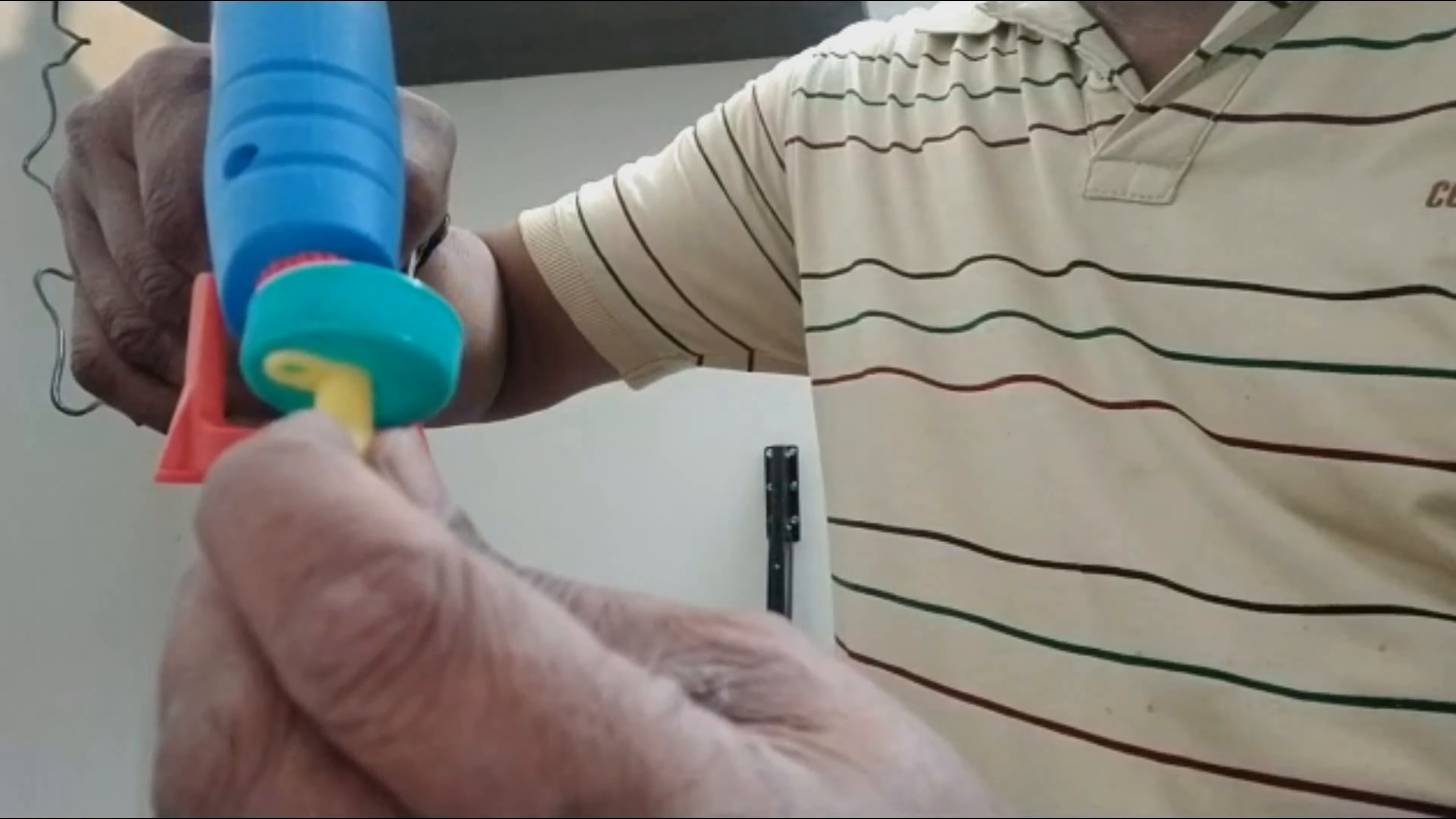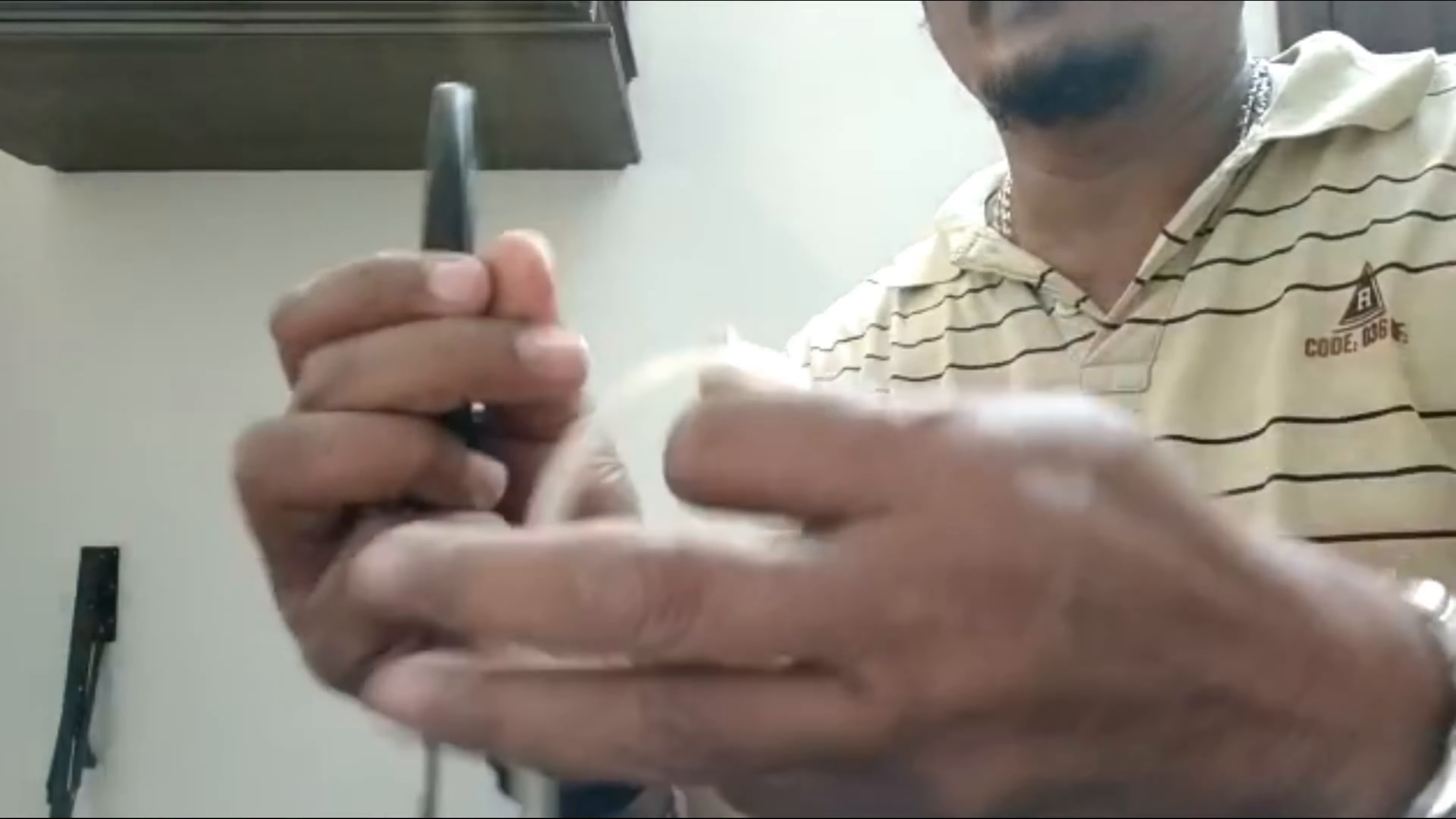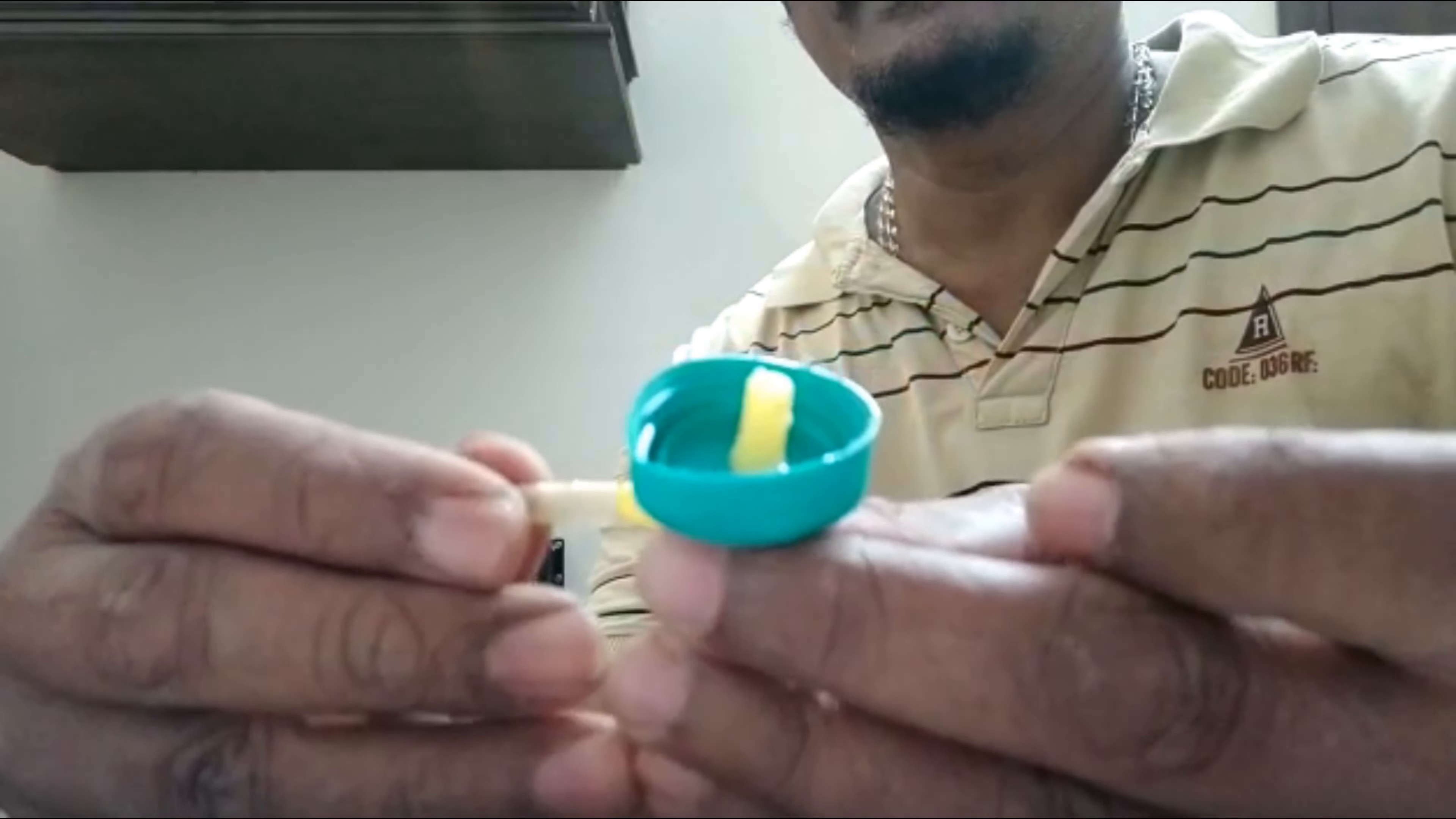To make any extension in the dripper, you can use these aquarium tubes, aerator tubes. Just cut them to the required length and then fix them to the caps that we have already prepared.